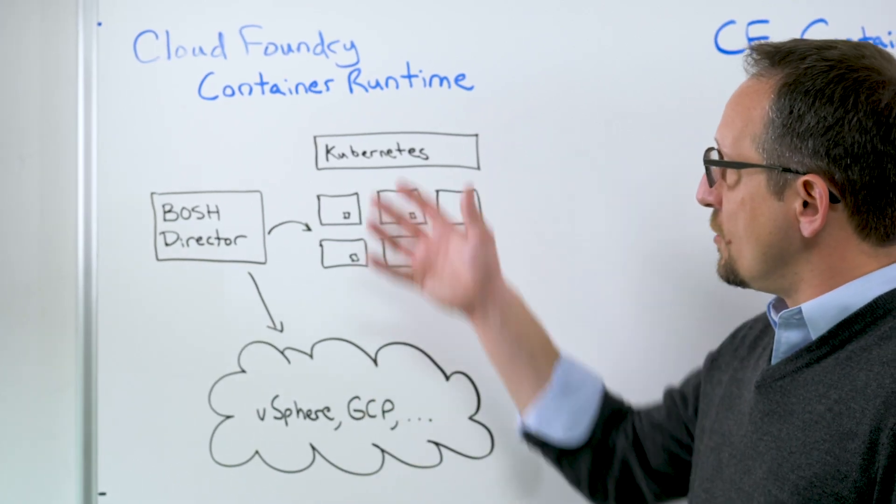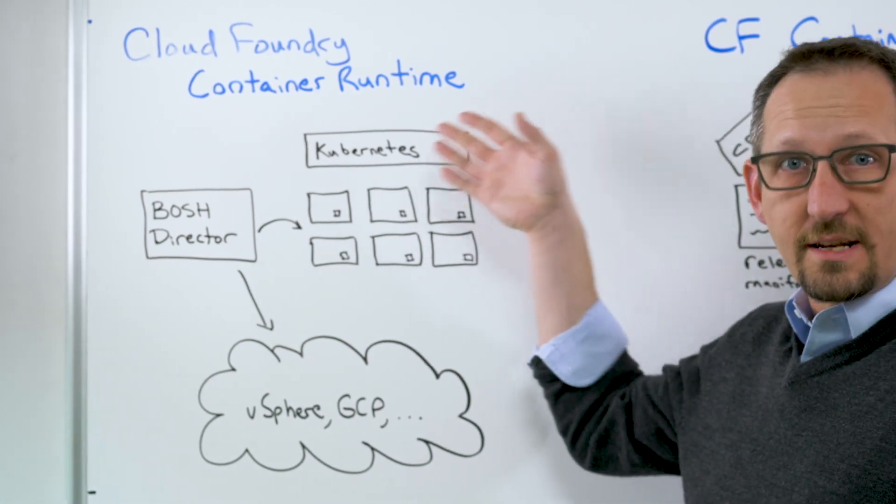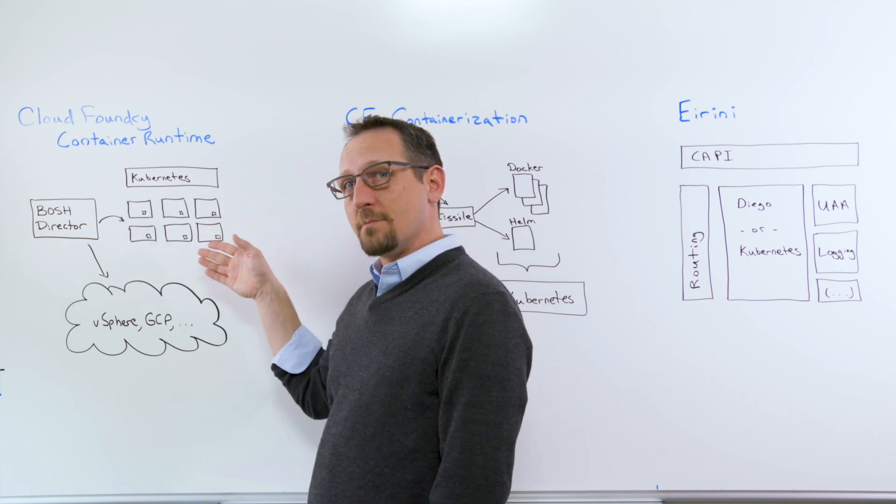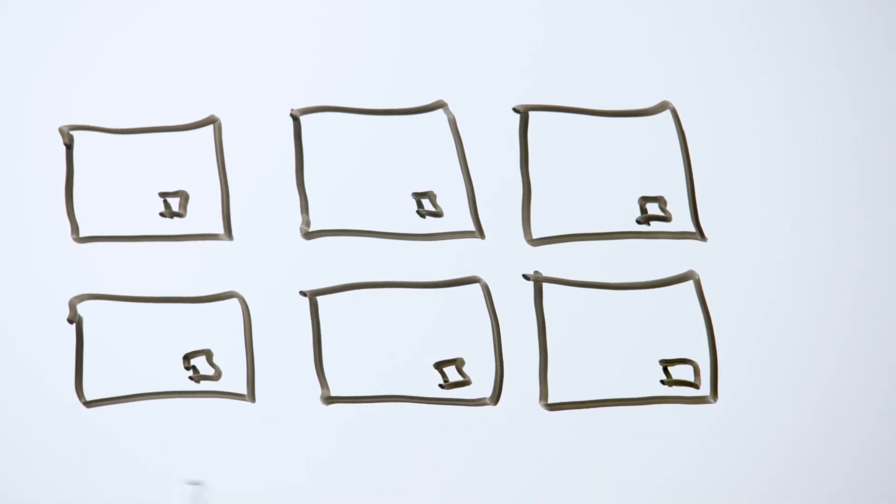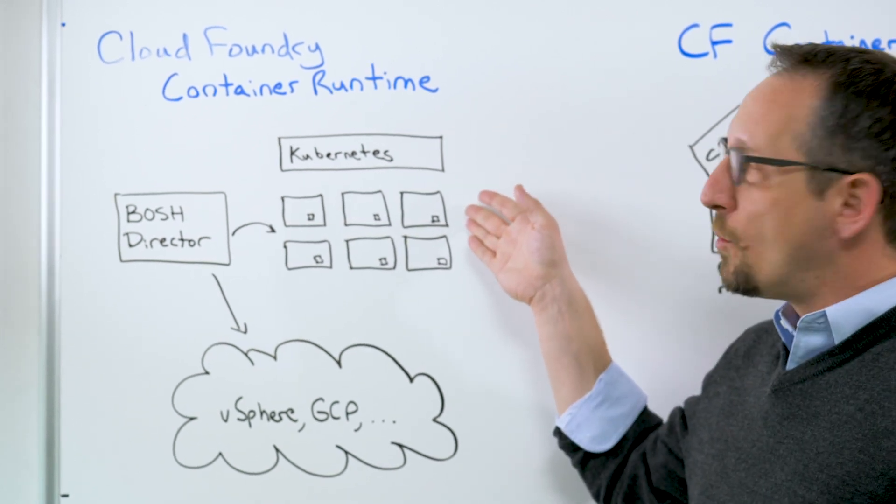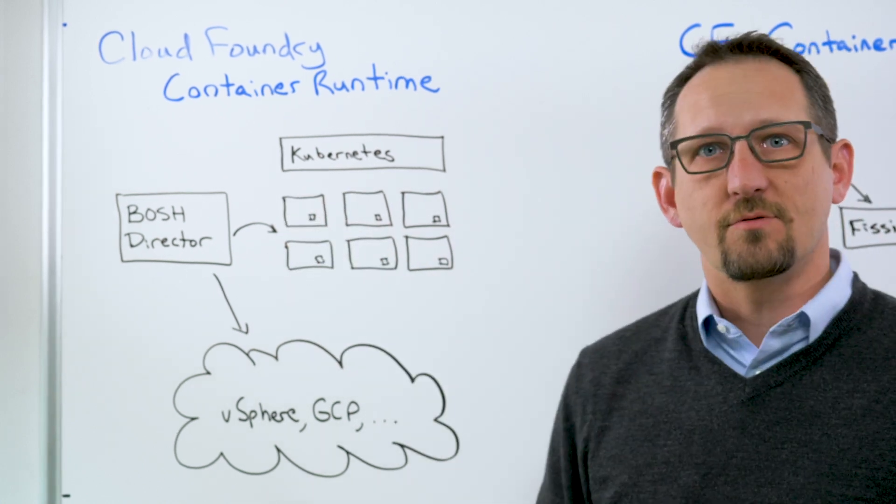The other thing that's very important about this dual scheduling layer, where Kubernetes is responsible for scheduling containers and BOSH is responsible for scheduling jobs onto virtual machines, which is in fact Kubernetes nodes, is what happens when a node disappears. Well, Kubernetes will redistribute all of the containers that it's responsible for.